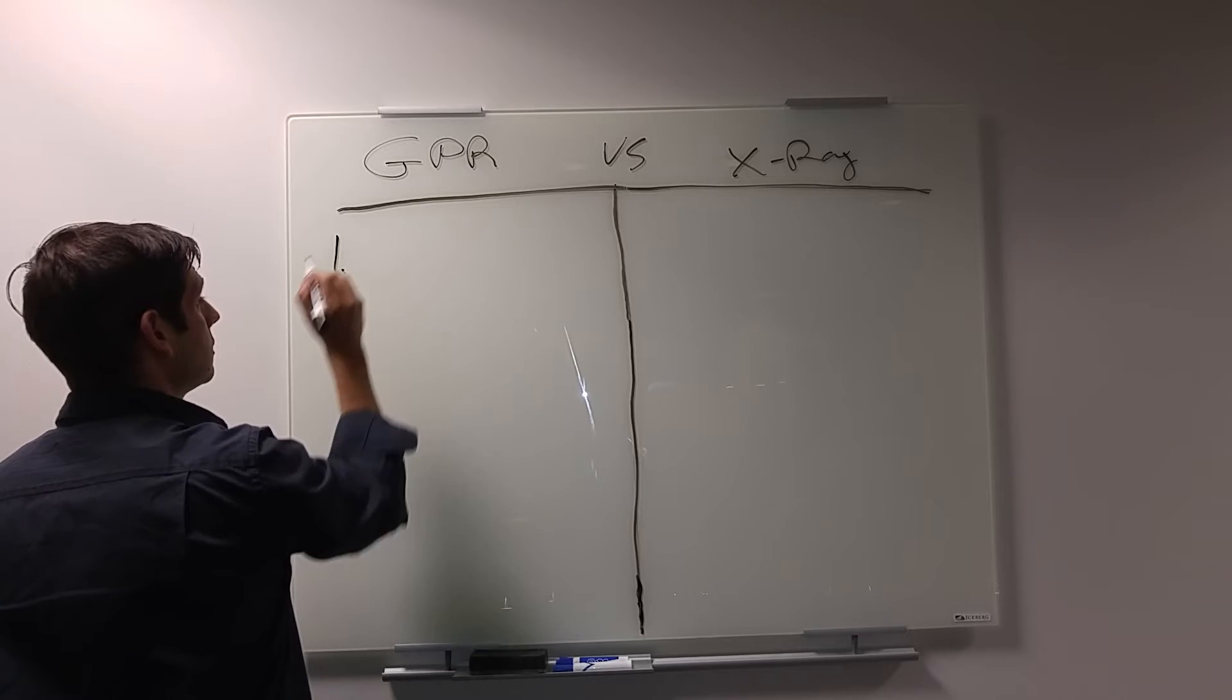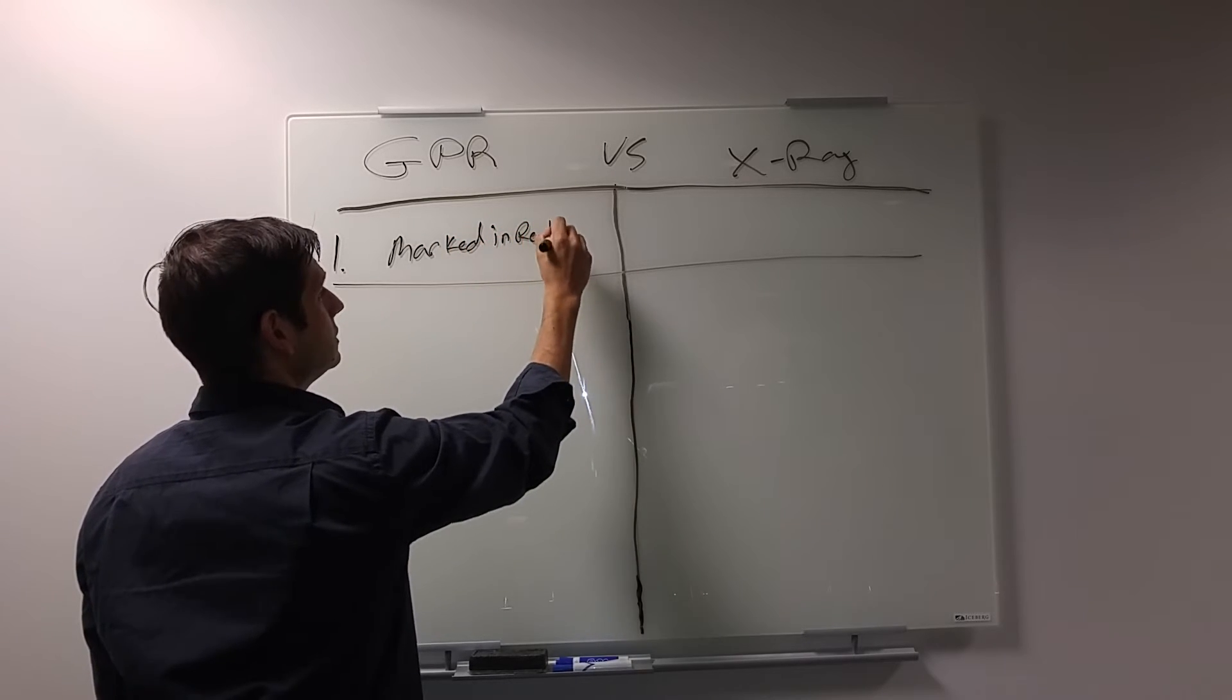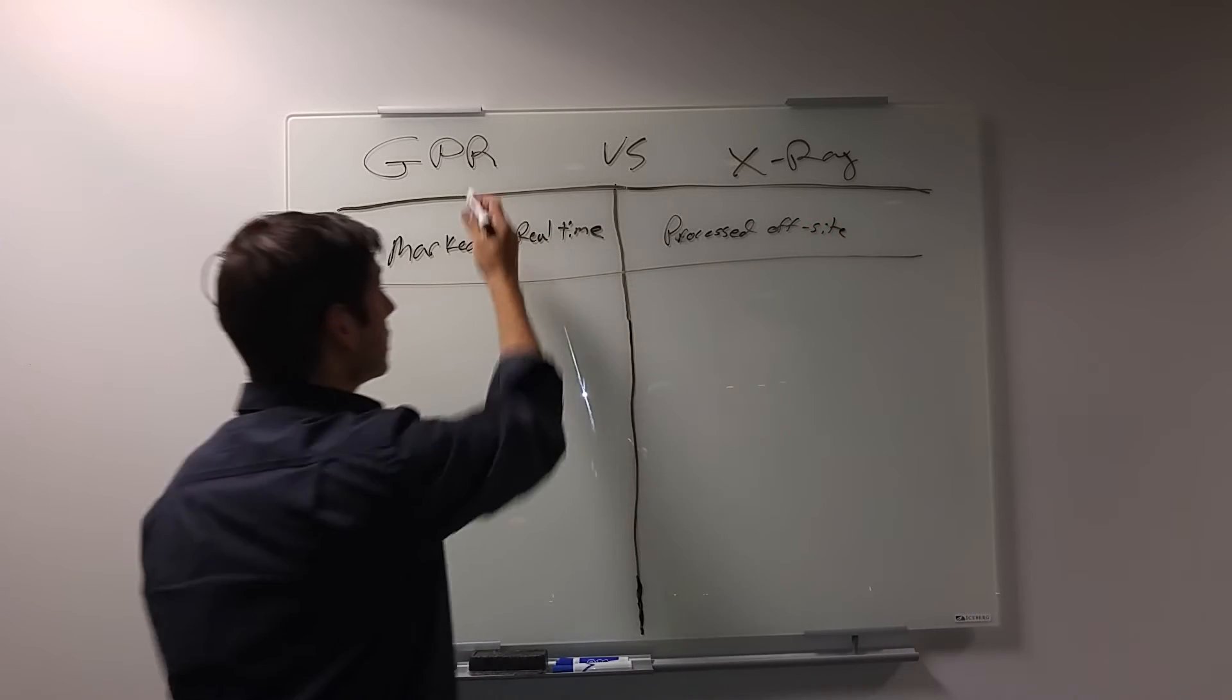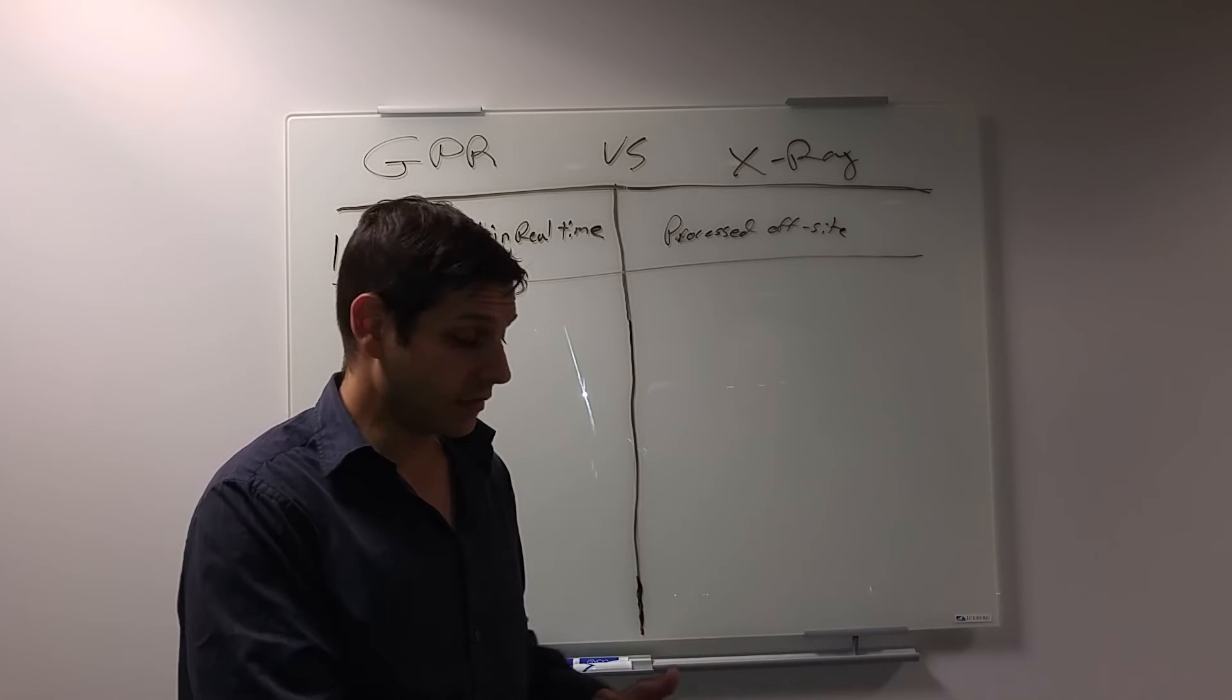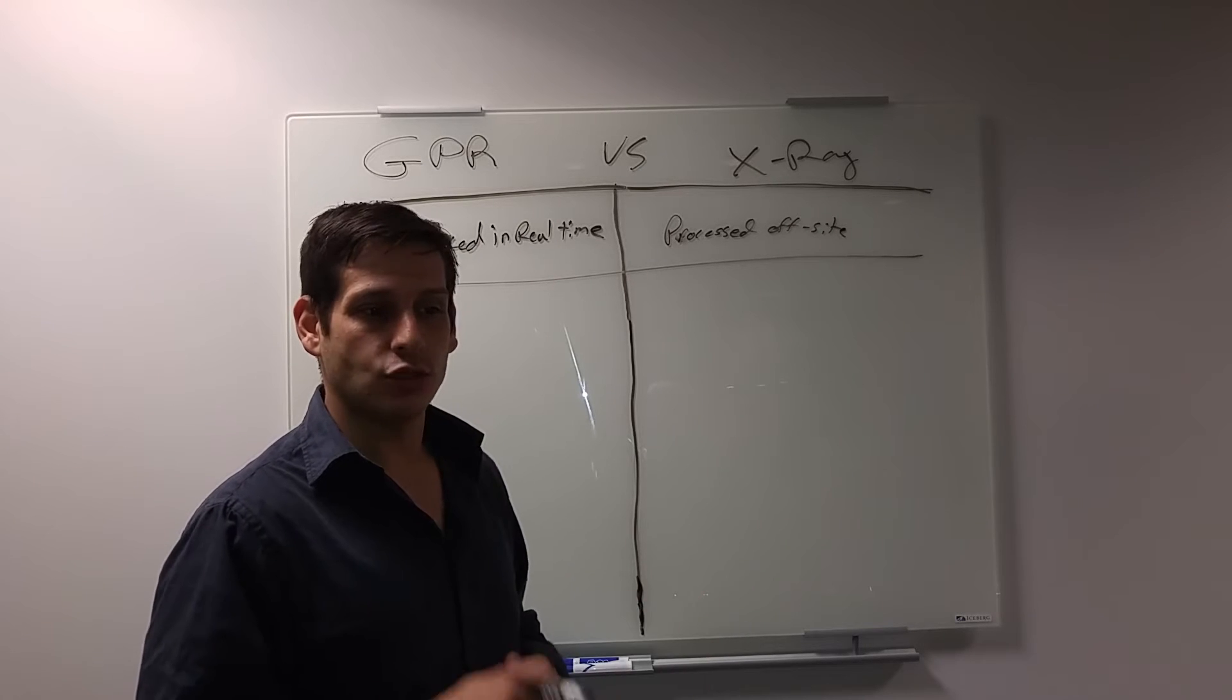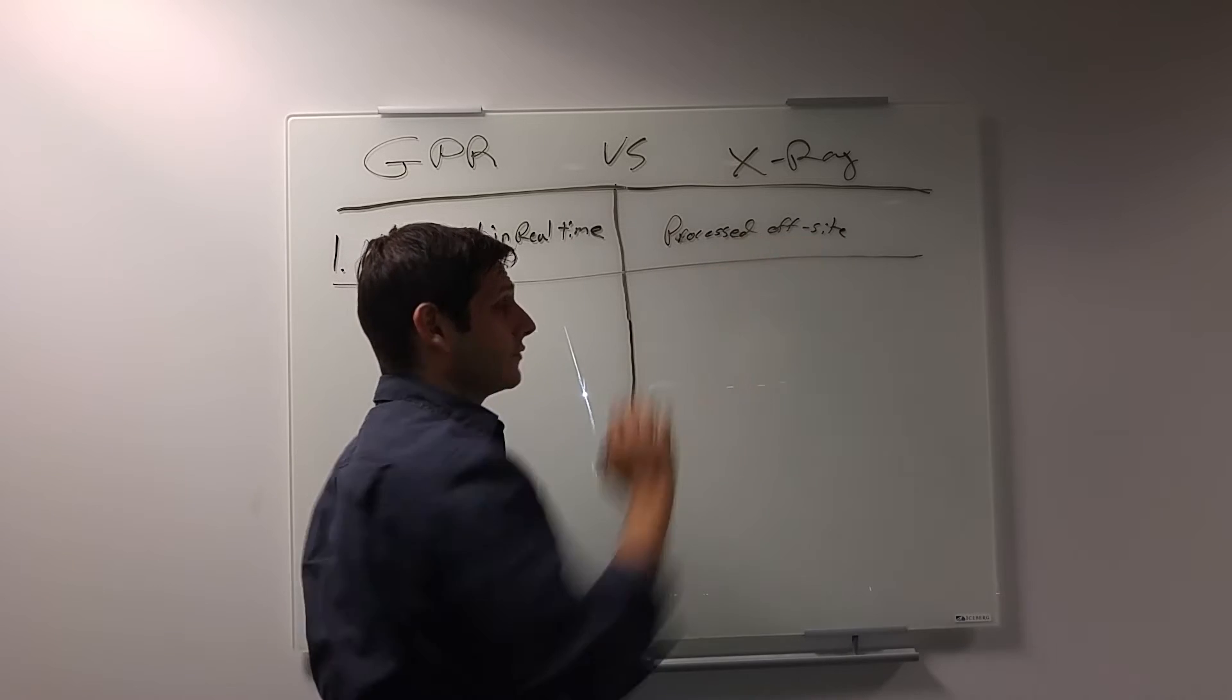So number one, GPR can be marked in real time, meaning that the concrete can be marked in real time, where X-ray has to be processed off-site. Now, GPR can be processed off-site as well, and I encourage people to do that, but that's sort of a second level. So you can mark right on the ground as you're locating, very accurate with your marks, exactly what you see with ground-penetrating radar. That's number one.